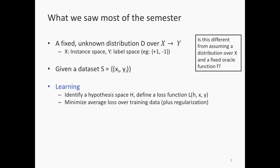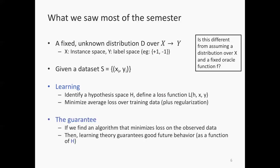There's some regularization, either explicitly with a regularizer or implicitly with something like dropout. The usual guarantee is if we find an algorithm that minimizes loss, then learning theory, with all the caveats, guarantees good future behavior.